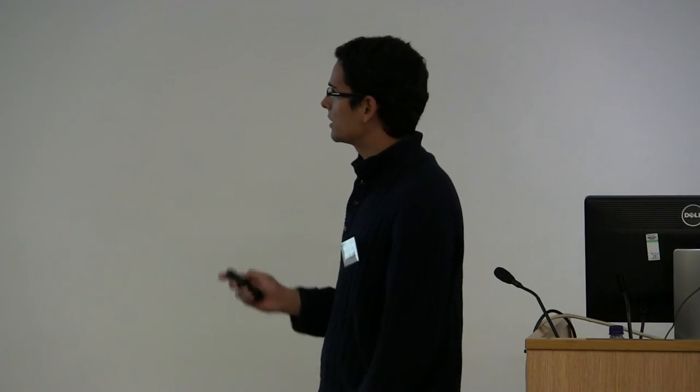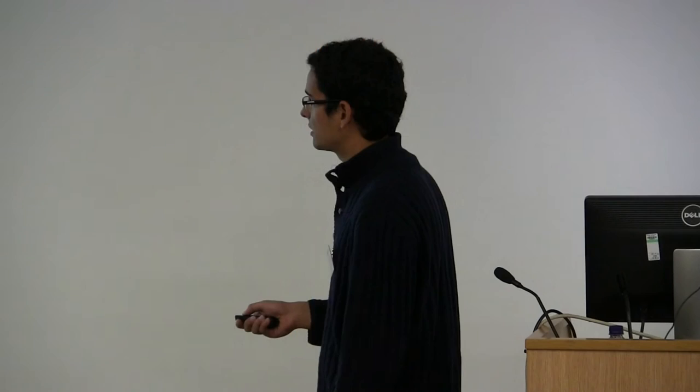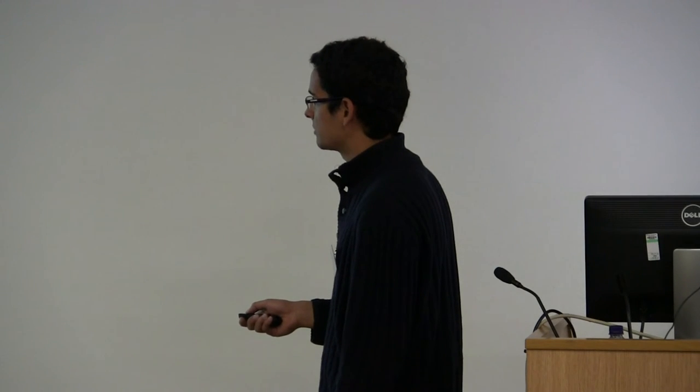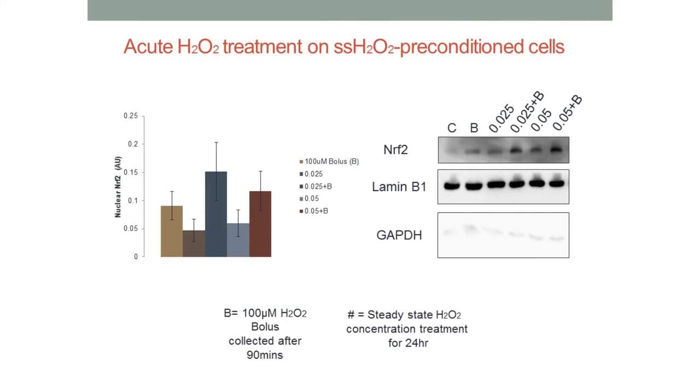And then when we actually further explore this by combining the treatment, so first we treat with a steady-state hydrogen peroxide for 24 hours, and then we have the acute hydrogen peroxide stimulus. We initially see an additive effect, so this is the low steady-state first, then you add the bolus, and you get an additive effect, and then you increase the steady-state to add the acute treatment, and this additive effect disappears. And we see exactly the same thing if we increase, if we double the concentration of the acute hydrogen peroxide treatment to 100 micromolar.